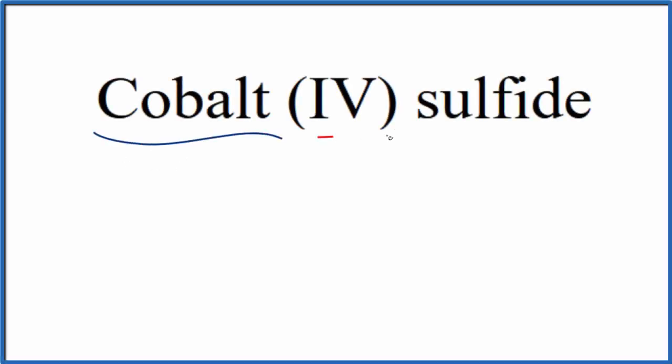To write the formula for cobalt (IV) sulfide, the first thing we'll do is write the element symbol for cobalt. That's just Co.